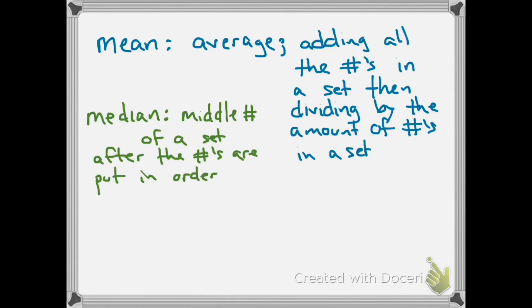And then the next one is our mode. Our mode, I also try and think of the mood. So if a lot of bad things are happening to you, you're going to be in a bad mood. So it's the number or numbers, because it could be more than one, you see most frequently.